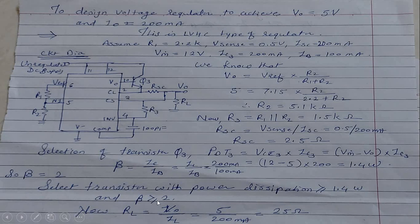We also calculate the load resistance RL. By Ohm's law, RL = Vout / IL = 5 V / 200 mA = 25 Ω. In this way, we can design any configuration of the voltage regulator using IC723. Thank you.